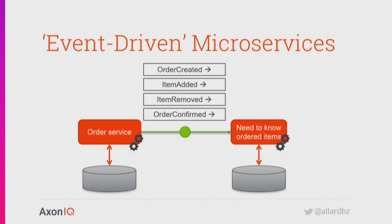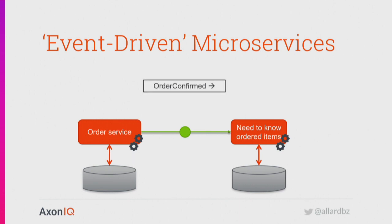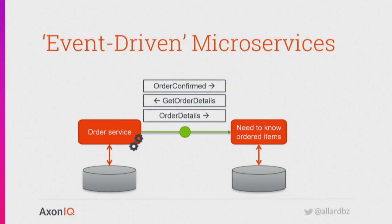If we go back to our example of the order service and the service that needs to know about ordered items, we can refactor this. The notification that something relevant happened is the order confirmed event. Now, whichever component needs to know about the items can go to the order service and ask for them via a query — and it will get the order details. Note that we did not change the direction of the dependency. The order service still exposes certain APIs and events, and the need-to-know-ordered-items service has a dependency on the API of that order service, not the other way around.